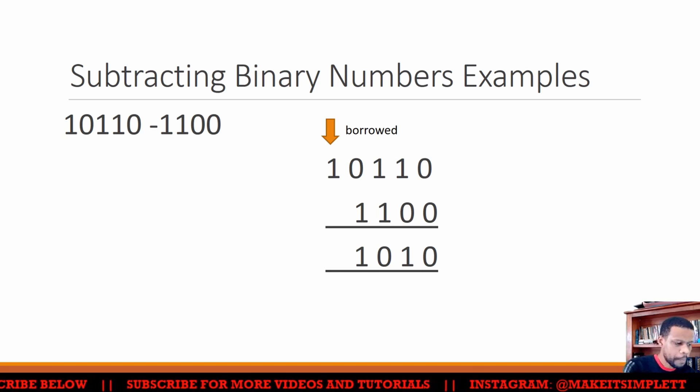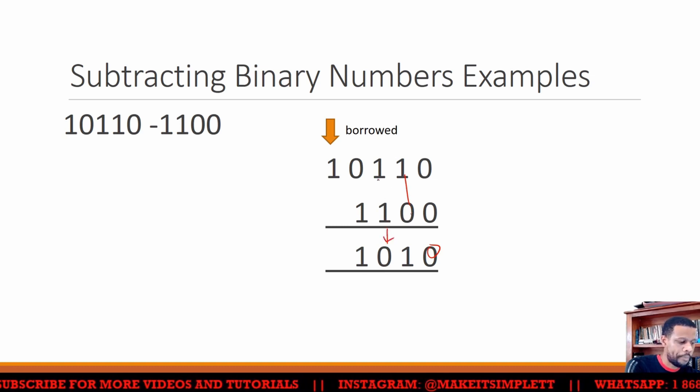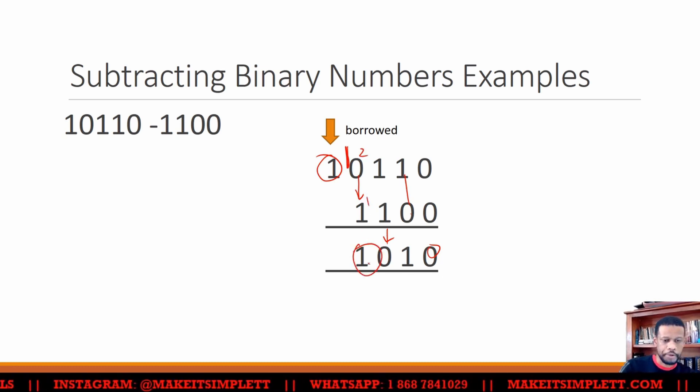Cool, subtraction, same kind of thing. Zero take away zero is zero, one take away zero is one, one take away one is zero. But zero take away one, you have to borrow the one from here. When you borrow the one from there, you're actually getting 10. 10 is two, take away one, if you convert it, you're gonna get one there.